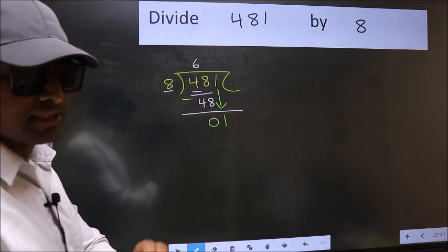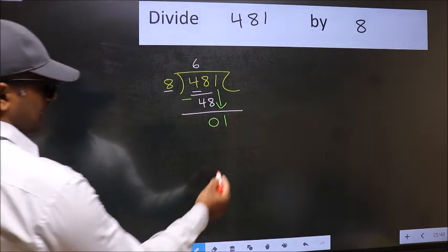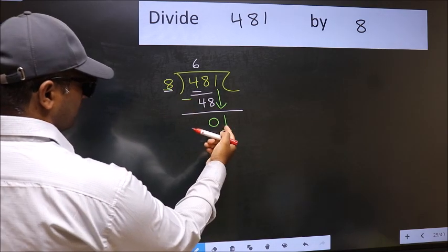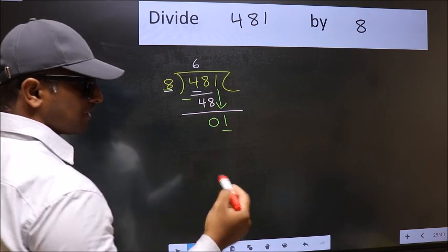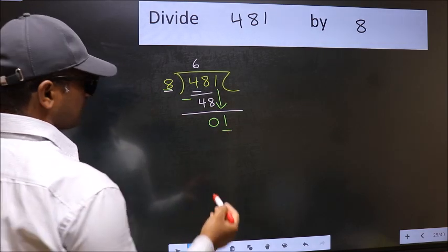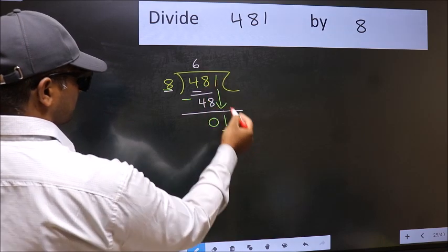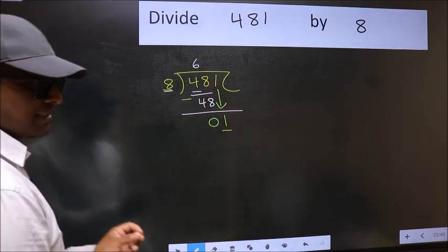And the mistake is this. Here we have 1 and here 8. 1 is smaller than 8. So what many do is they directly put dot and take 0, which is wrong.